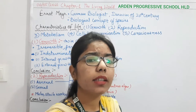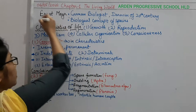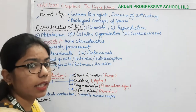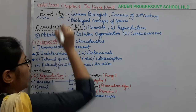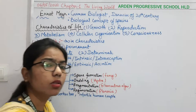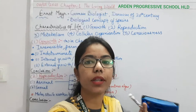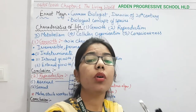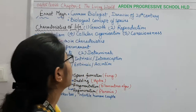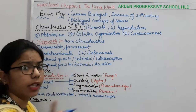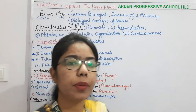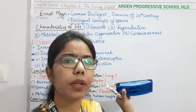If you look at the NCERT textbook, you will see the name Ernest Mayr — a very important name. He was a German biologist, also known as the Darwin of the 20th century, who made great contributions to biology. An important question: the biological concept of species was given by Ernest Mayr.